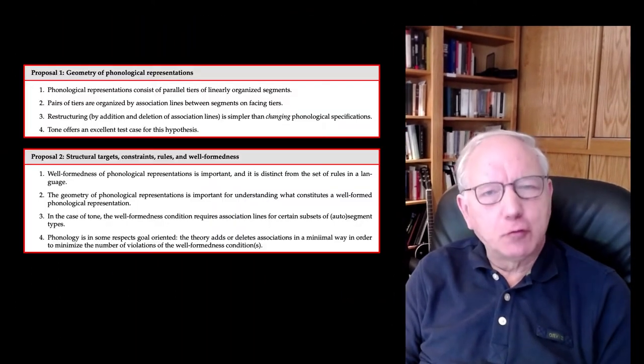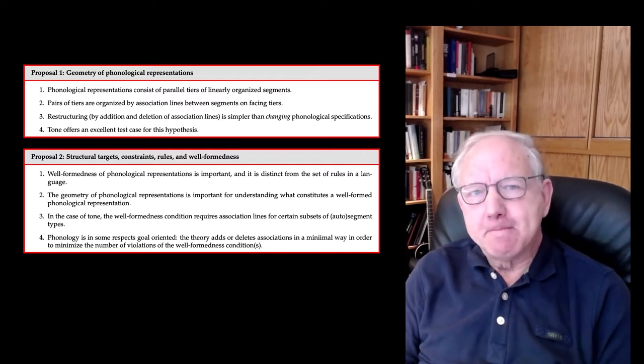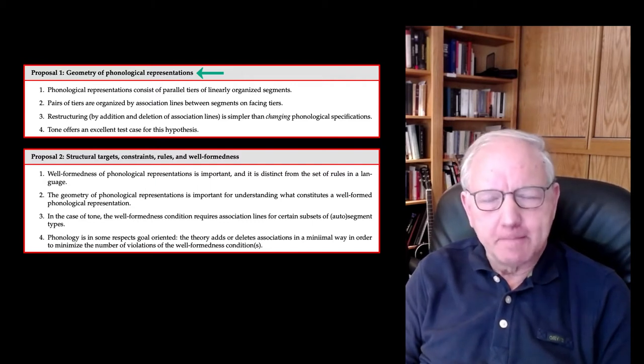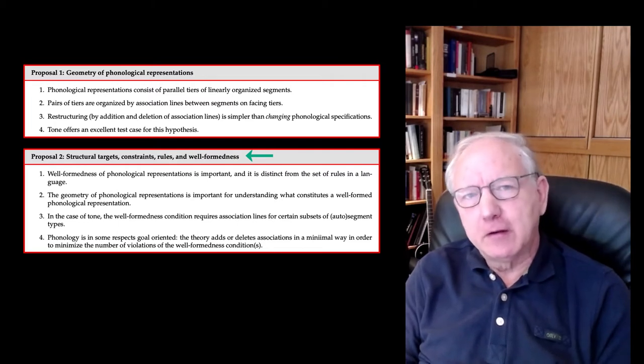I'm John Goldsmith and I'd like to talk about autosegmental phonology, primarily as I proposed it in my 1976 dissertation, but also towards the end I'd like to talk about some of the developments that I discuss in a book I published in 1990 called Autosegmental and Metrical Phonology. The 1976 proposal had two sets of ideas that it championed: one has to do with phonological representation, and the second has to do with the notions of constraint and well-formedness and how those notions interact with rule application.